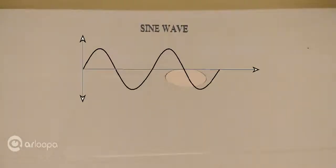A sine wave or a sinusoid is a mathematical curve that describes a smooth periodic oscillation. A sine wave is a continuous wave. It is named after the function of sine, of which it is a graph.